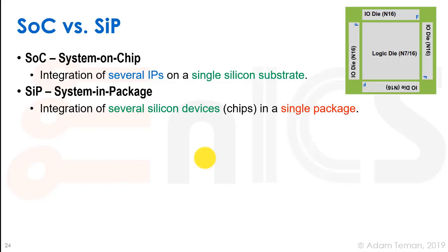System in package, or SIP, is where we take several chips — several separate silicon devices — and put them all in one single package. In the example shown here, there is one die and other dies all around it. The first die might be in 7 nanometer or 60 nanometer, and the others could be in an older technology, such as 16 nanometer.